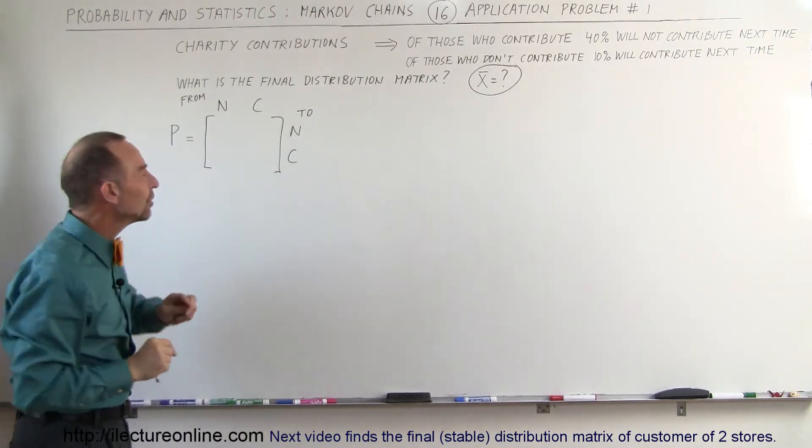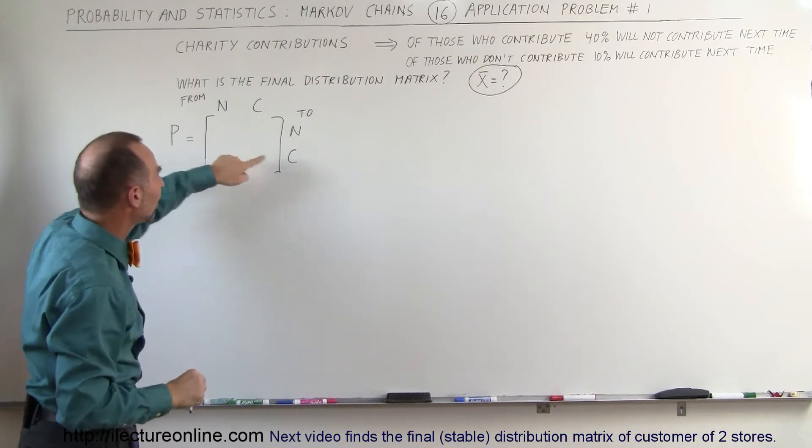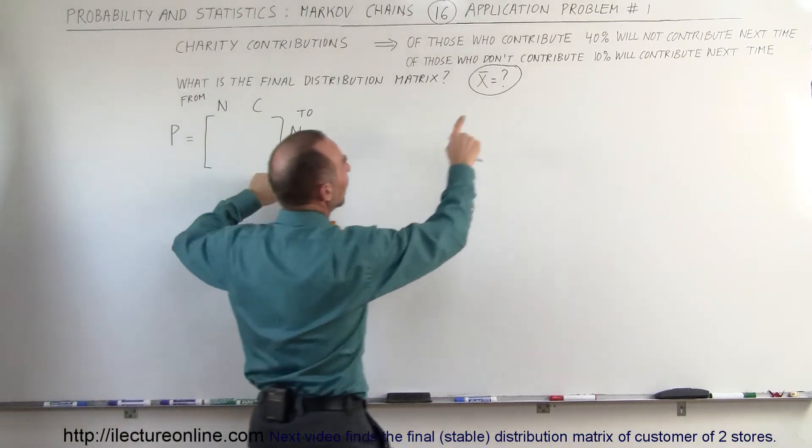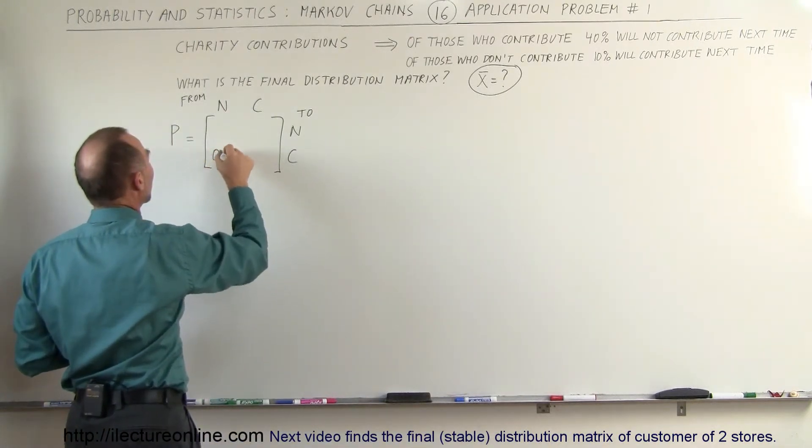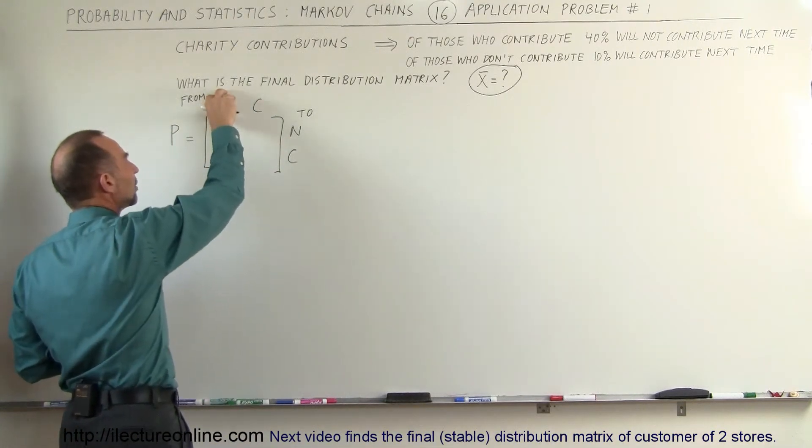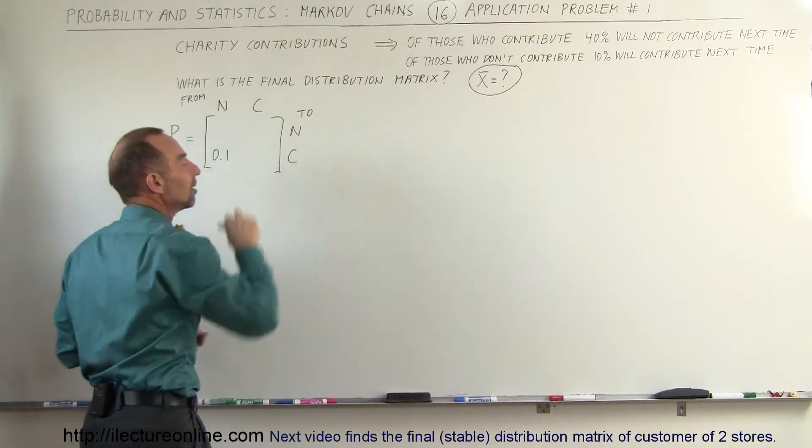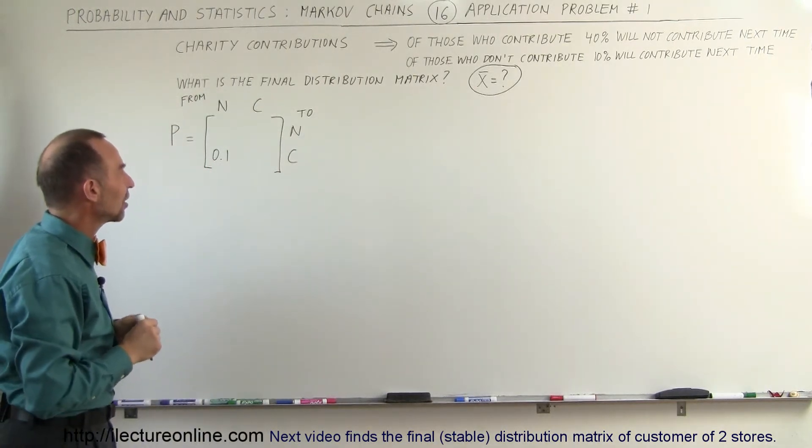Before we do that, let's go, if they're not contributing, what's the percentage that they will contribute? Here we see that it's a 10% change, so we can say that this will be 0.1. So if they're not contributing today, 10% of them will contribute in the future, like next year.